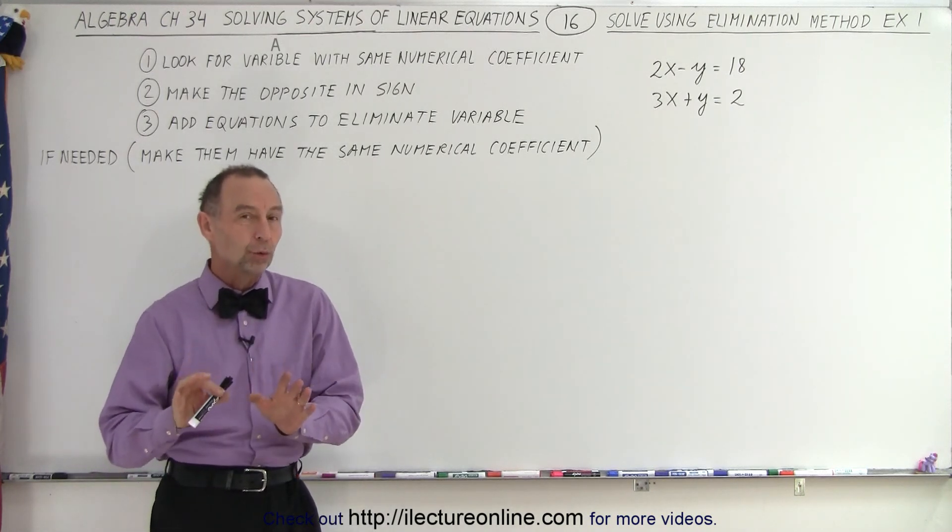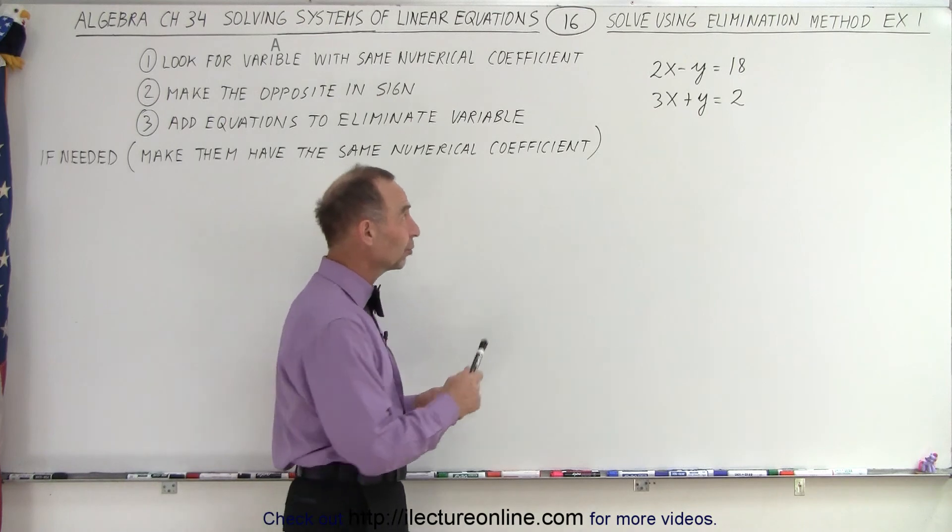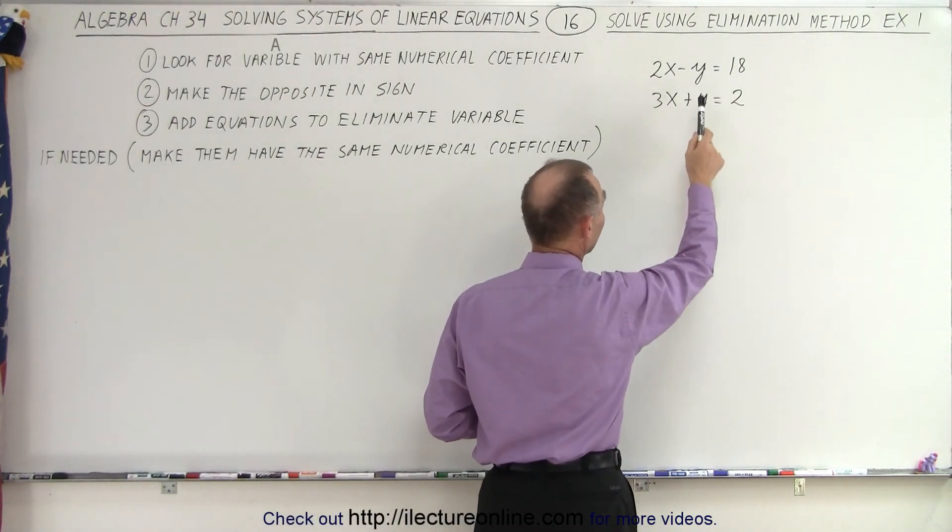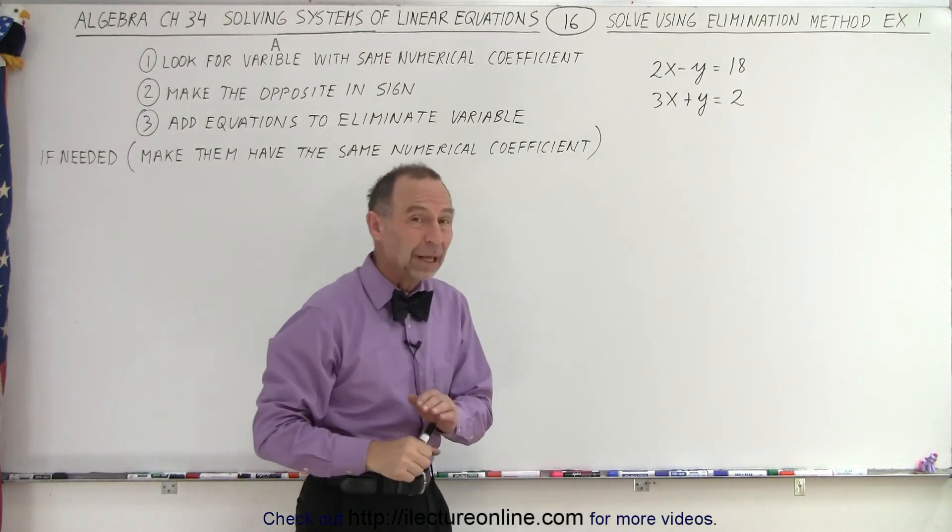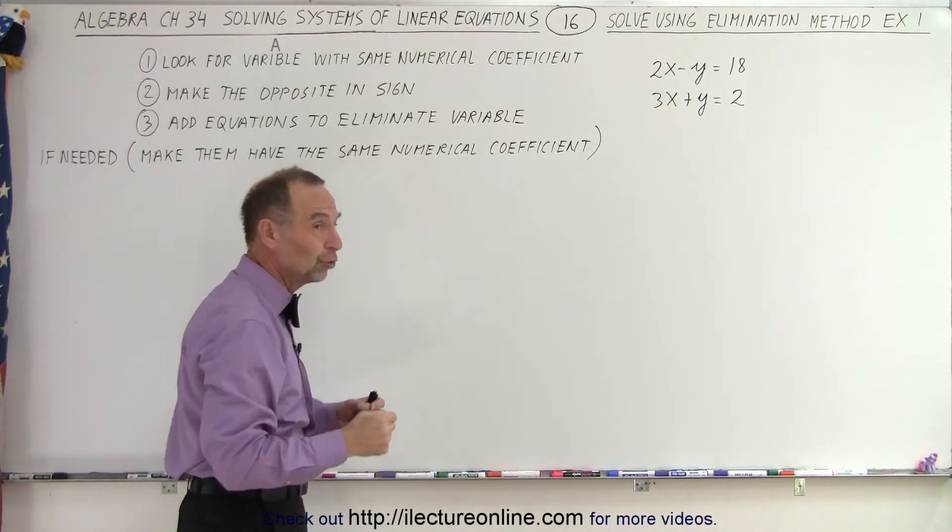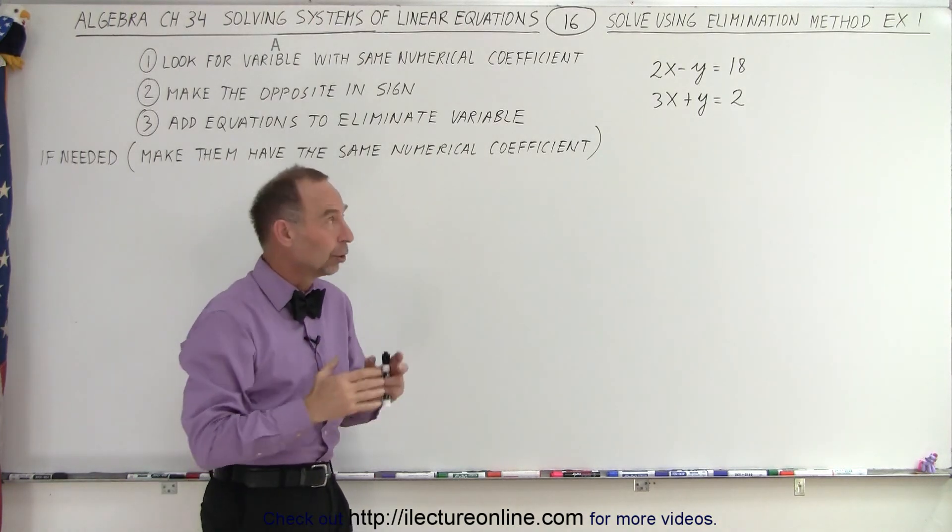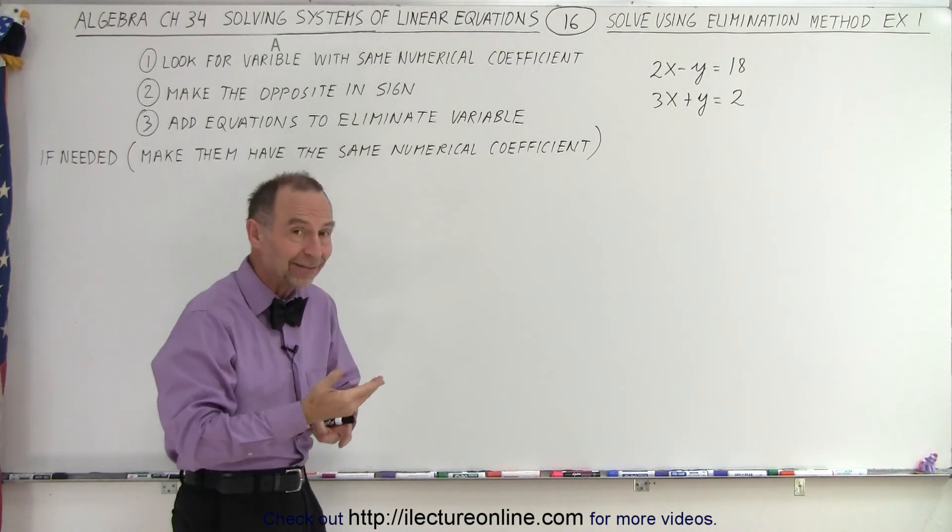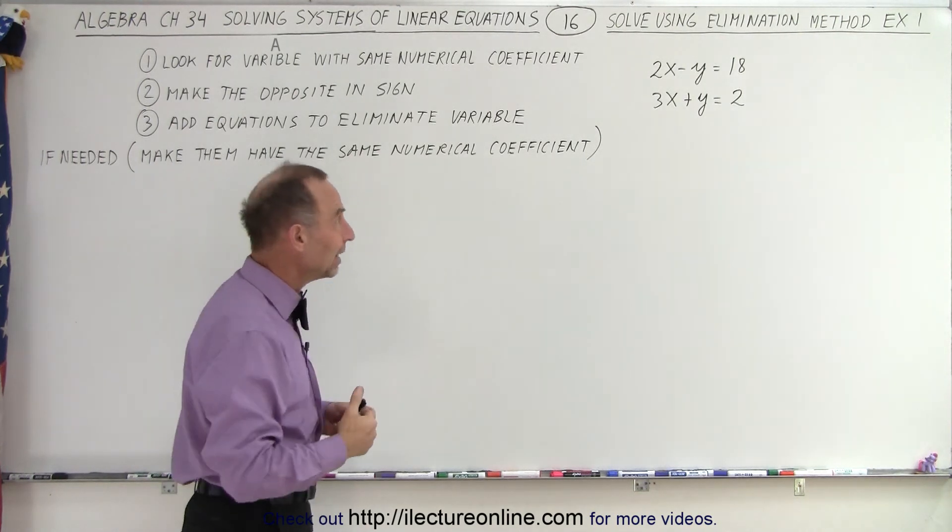Now, we shouldn't have to be told to use the method of elimination, because when we take a look, we notice that one of the variables, in this case y, has the same numerical coefficient, and one being negative and one being positive. That already takes care of the first two steps we would normally take: look for a variable that has the same numerical coefficient, and then make the signs opposite. It's already in that format.